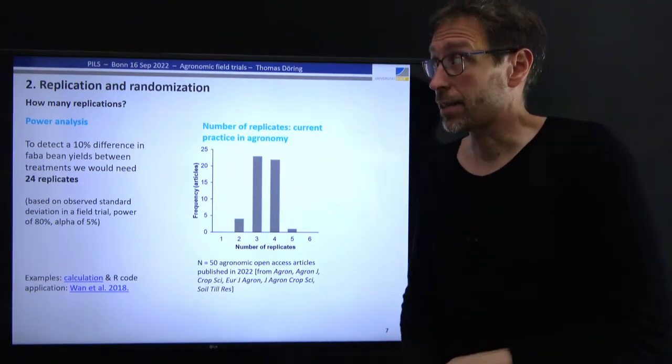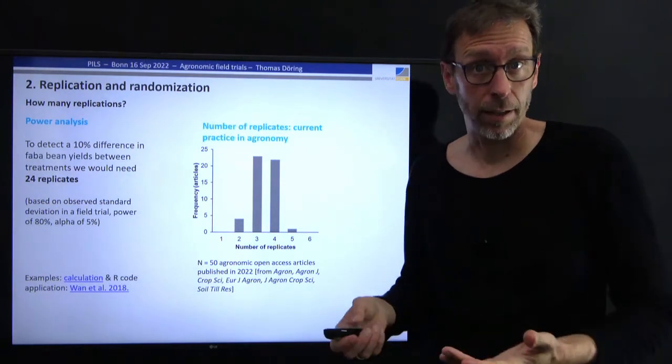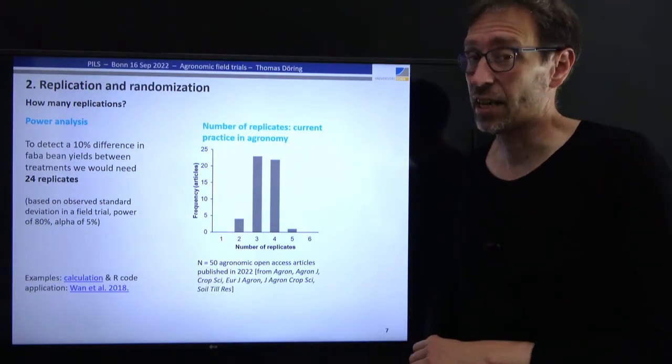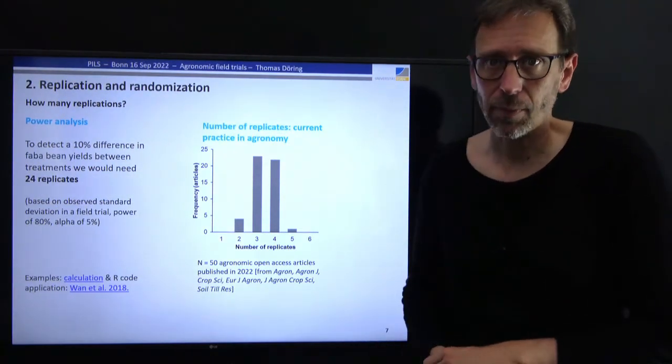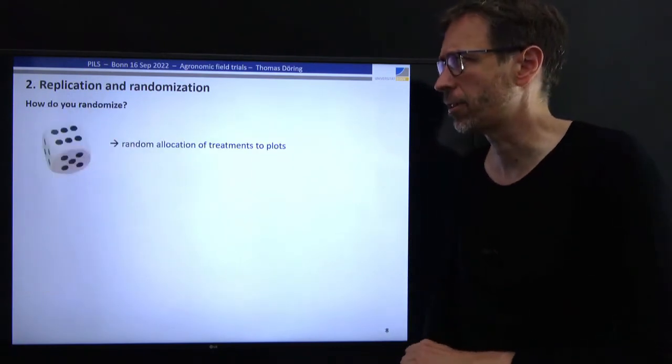In an analysis of 50 different papers, the most frequent number of replicates in field trials was 3 or 4. With 4 replicates, only about a 30% yield difference would be detectable — much larger than the 10% difference achievable with 24 replicates. So replication is very much needed, but not enough on its own; we also need randomization.